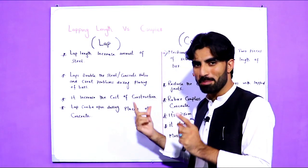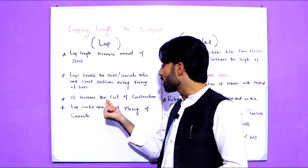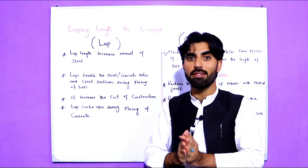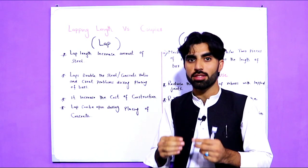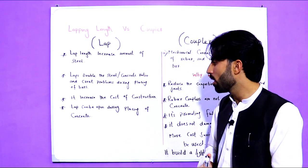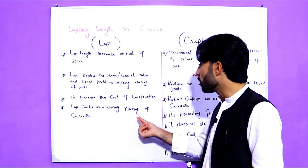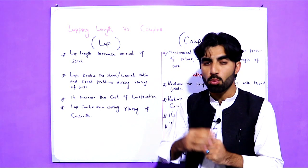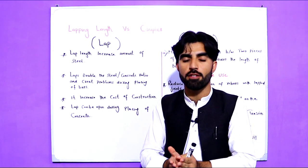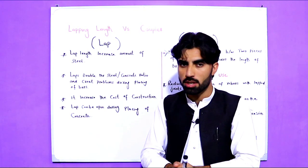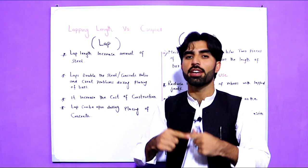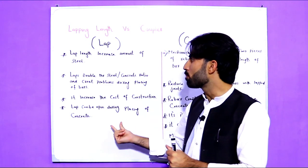When one steel bar overlaps with another it becomes double, which affects our concrete ratio and creates problems during placing of rebars. It also increases the cost of construction because we need more steel bars at the lapping joints. Additionally, the lap can open up during placing of concrete — because the overlap is only bound with binding wire, and during vibration of formwork or placing of concrete or steel bars, the lapping can come open, creating problems on site.